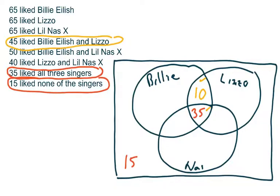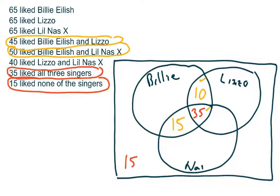We do the same thing for every other piece of data involving two sets. Here's another one: 50 liked Billie Eilish and Lil Nas X. Billie's circle and Lil Nas X's circle overlap. We've already accounted for 35 people who like all three — right in the middle. 50 minus 35 means there are 15 more people represented in that region: people who like Billie Eilish and Lil Nas X but don't like Lizzo.